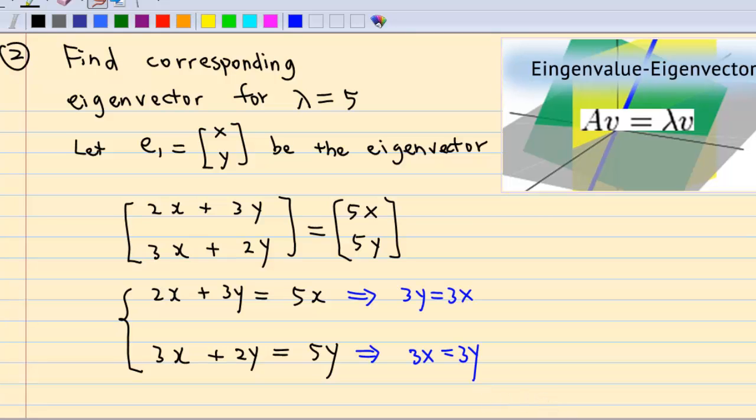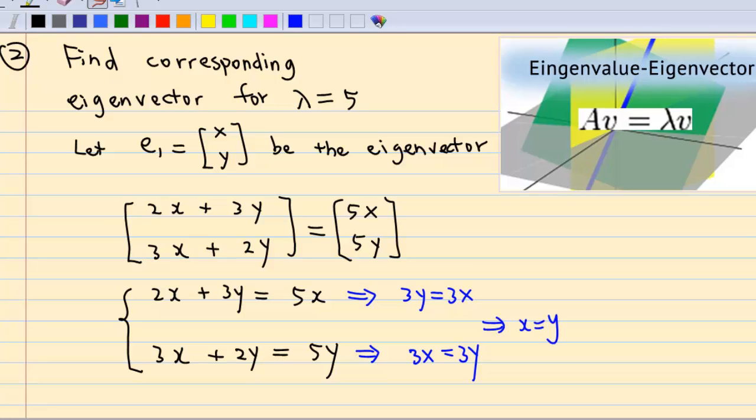Which means 3y equal to 3x from the first equation, and 3x equal to 3y from the second equation, or x equal to y.